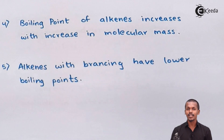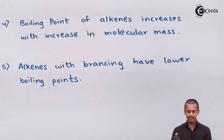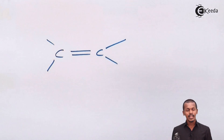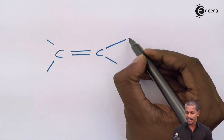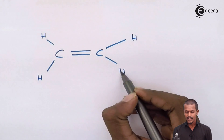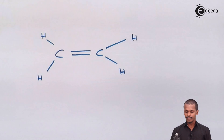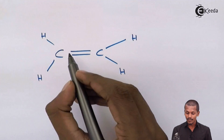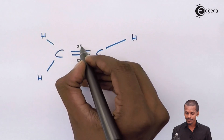Alkenes consist of a carbon-carbon double bond. In that double bond, one bond is strong and one is weak — one is a sigma bond and one is a pi bond. The sigma bond is formed by head-on overlap of orbitals, while the pi bond is formed by lateral overlapping of p orbitals.